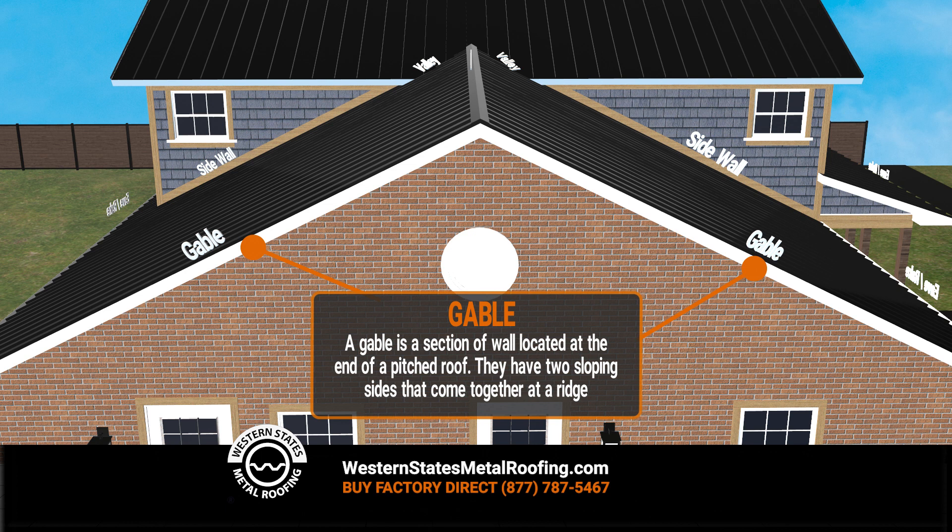A gable is a section of wall located at the end of a pitched roof. They have two sloping sides that come together at a ridge.